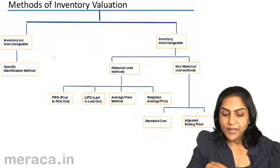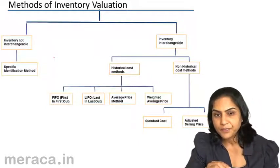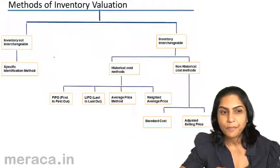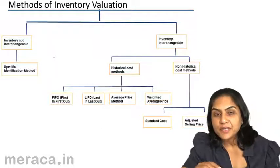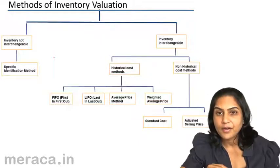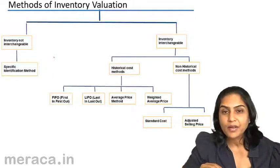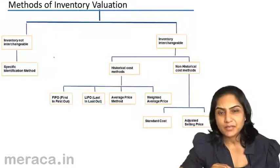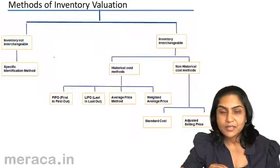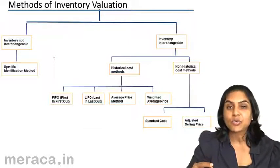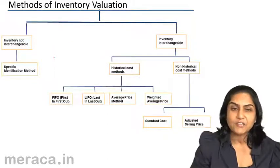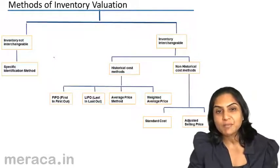Let us come to the inventory which is not interchangeable. Suppose a factory makes shirts. It so happens that the factory has got a special order where the shirts require some gold-plated buttons. So when we buy buttons, there is one special batch of buttons which come in which are gold-plated. This is specific and to be used only for that specific job.